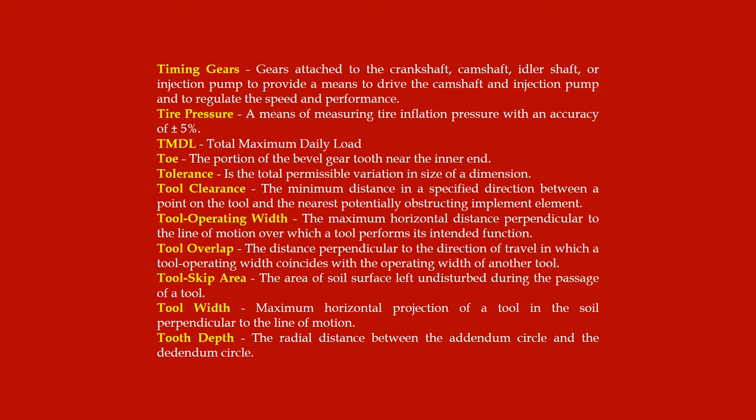Toe: the portion of the bevel gear tooth near the inner end. Tolerance: the total permissible variation in size of a dimension. Tool clearance: the minimum distance in a specified direction between a point on the tool and the nearest potentially obstructing implement element. Tool operating width: the maximum horizontal distance perpendicular to the line of motion over which a tool performs its intended function. Tool overlap: the distance perpendicular to the direction of travel in which a tool operating width coincides with the operating width of another tool.